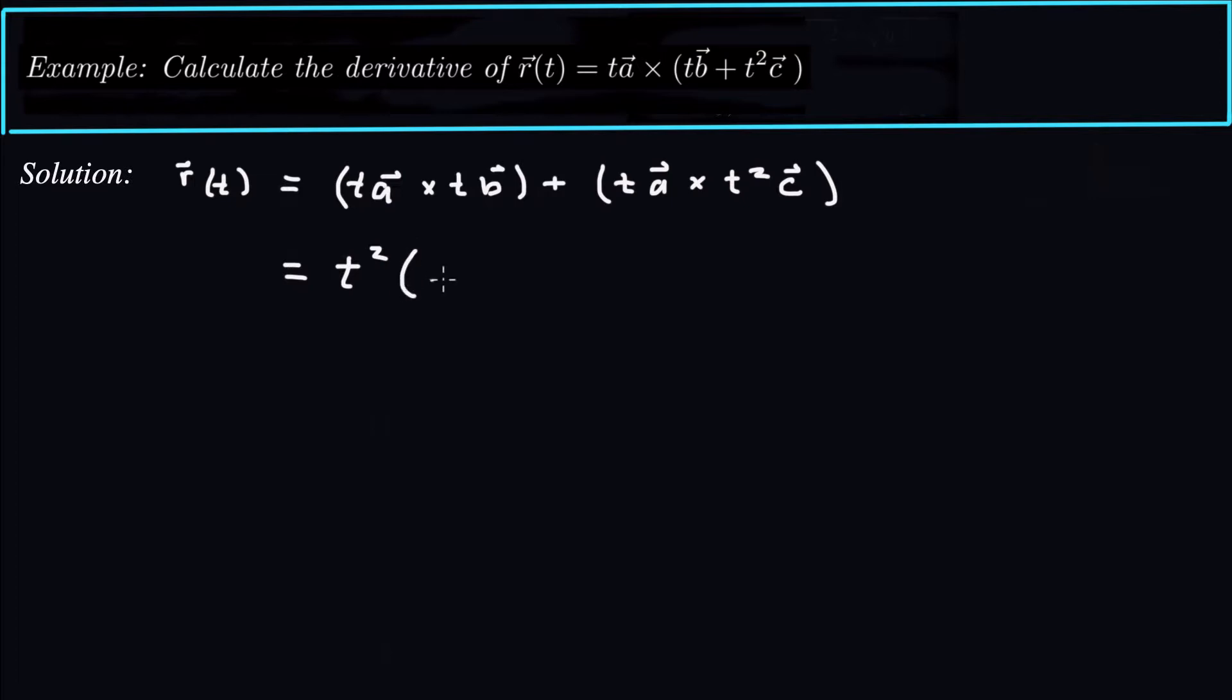A times b, or a cross b basically. So a cross b, plus, t cubed is going to come out of this cross product, and then a cross c is left. And now a cross c is just a constant vector. So now r of t is written this way.